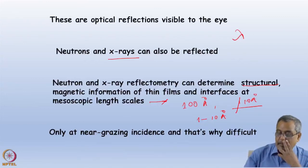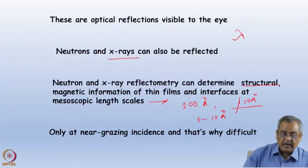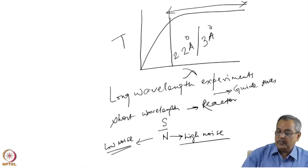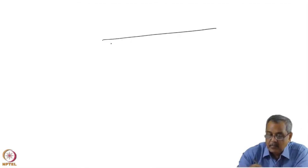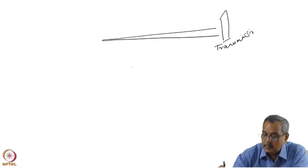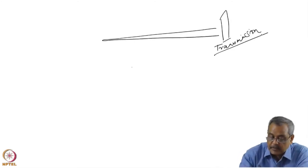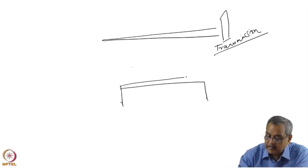Before I get into that, let me quickly tell you the difficulty. In the case of small angle, we use a very narrow beam and the sample is in transmission mode. Whereas in case of X-ray/neutron reflectometry, we have a thin film mostly on a substrate, and I have to put it in reflection mode in a narrow beam.